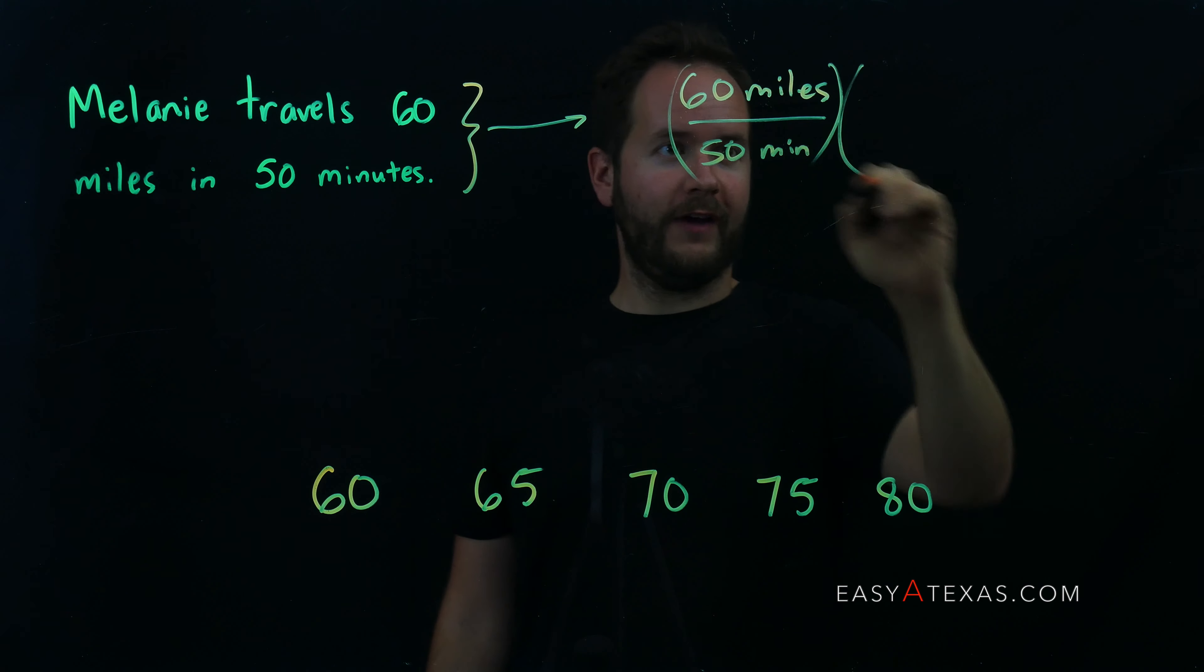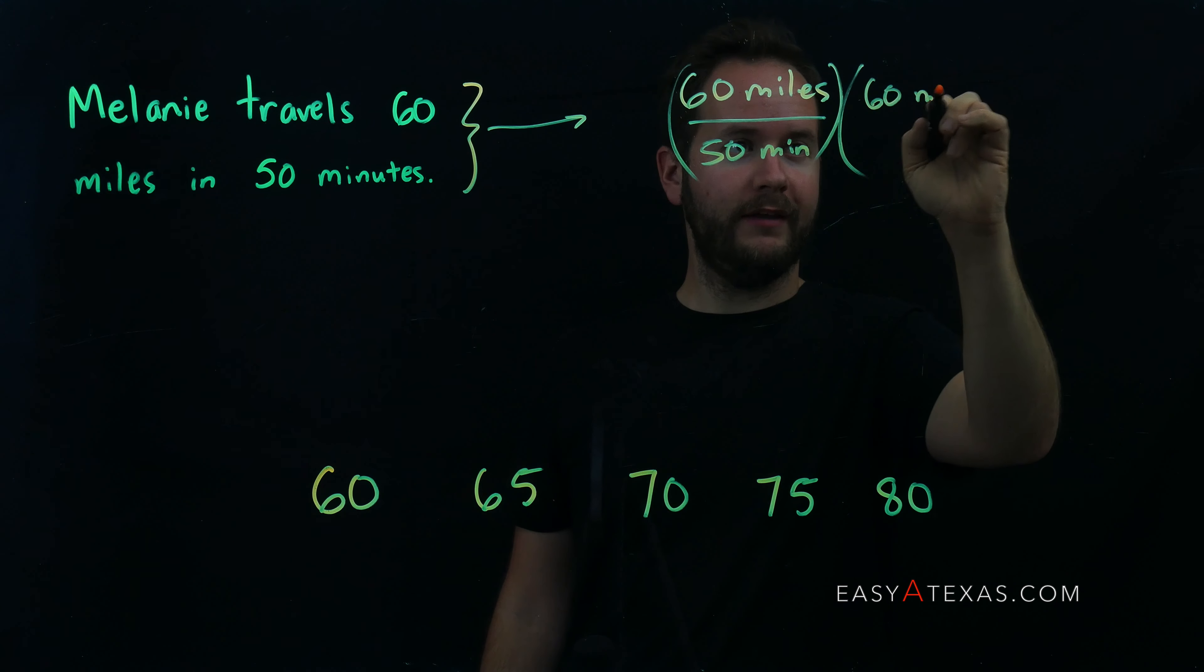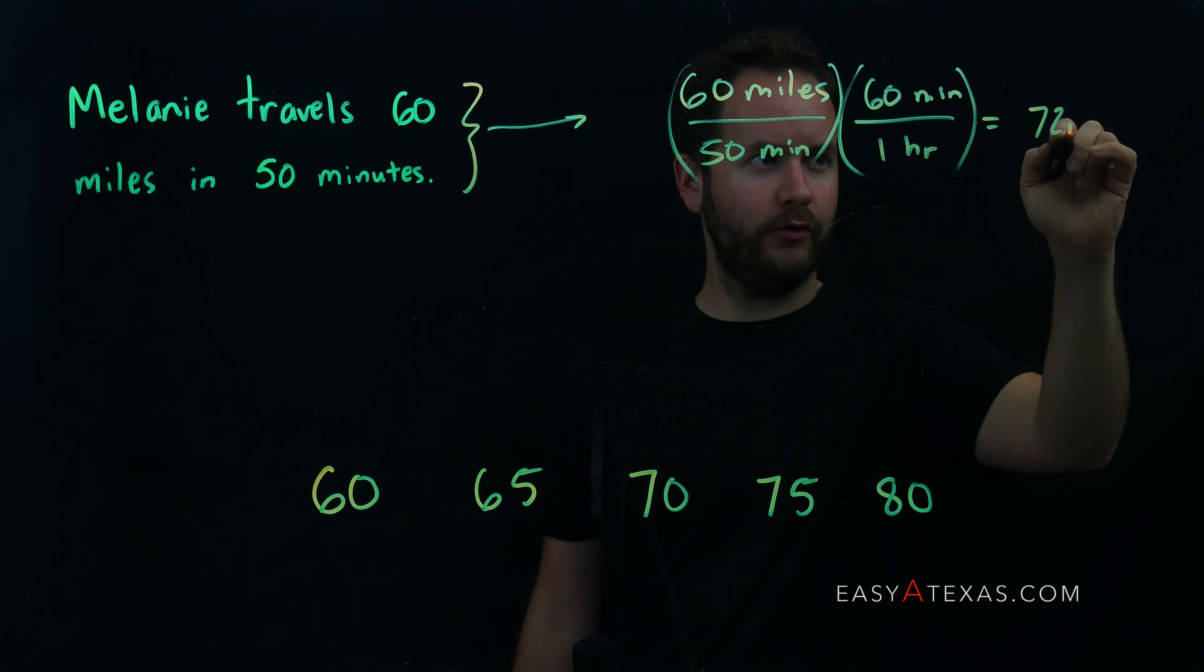And then we need a conversion factor. We know that 60 minutes are in one hour. And if we do this multiplication, we get 72 miles per hour.